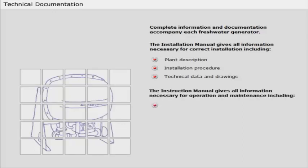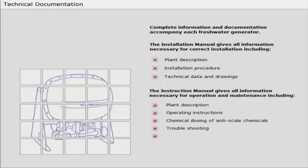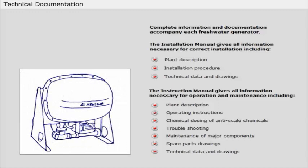The instruction manual gives all information necessary for operation and maintenance including plant description, operating instructions, chemical dosing of anti-scale chemicals, troubleshooting, maintenance of major components, spare parts drawings, technical data and drawings.